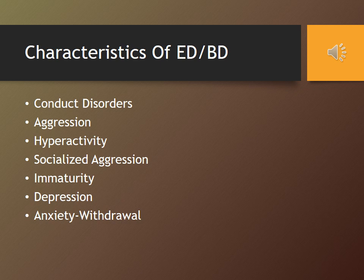Emotional and behavioral disorders are a huge umbrella under which a number of disorders can fit, including conduct disorders, aggression-related problems and anger outbursts, hyperactivity such as ADHD, socialized aggression, problems related to depression and low mood, and anxiety and withdrawal. One individual may have all or few of these characteristics, or may have one specific disorder such as conduct disorder.